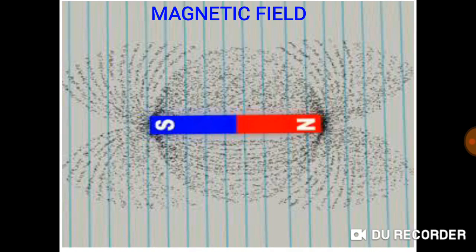Magnets have an area around them. This area is invisible to the human eye. This area is called the magnetic field. If a magnetic object is inside that area, it gets attracted towards the magnet.